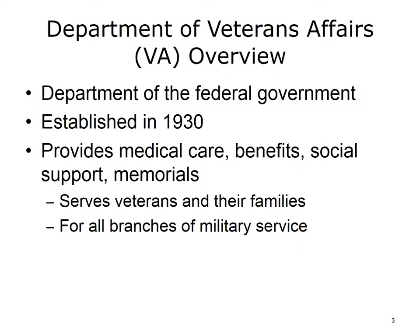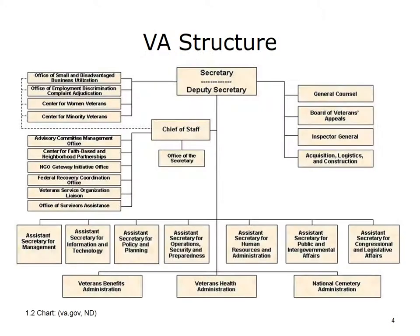The spouses, children, and parents of a deceased veteran are also considered family members. This flowchart illustrates how the VA is structured. The office of the secretary at the top provides oversight. Several specialized offices are listed at the top left, with programs for small business, employment discrimination, women veterans, and minority veterans. Just above the bottom row are offices for information and technology, policy and planning, security and preparedness, human resources, government affairs, and legislative affairs. At the bottom of the flowchart are three other branches of the VA: the Veterans Health Administration, which manages healthcare services; the Veterans Benefits Administration, which provides financial assistance; and the National Cemetery Administration, which manages burials and memorials. These three organizations oversee facilities throughout the U.S.